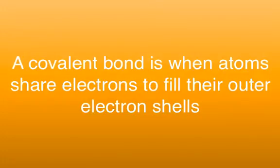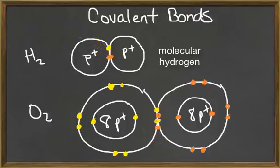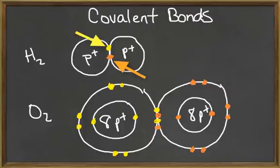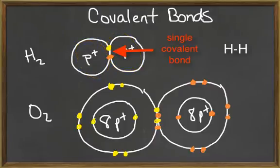A covalent bond is when atoms fill their outer electron shells by sharing electrons with other atoms instead of gaining or losing electrons. For example, hydrogen is not found in the body as a single atom. Instead, hydrogen is found as a molecule with two hydrogen atoms bonded together forming H2. Molecular hydrogen, or H2, is a gas present in the atmosphere in very small amounts. Each hydrogen atom has one electron in its only energy level. Because it needs two electrons to be stable, it will share its electron with another hydrogen. Now each hydrogen will share the two electrons, and these two electrons will orbit around the nuclei of both hydrogen atoms. The sharing of one pair of electrons is called a single covalent bond.